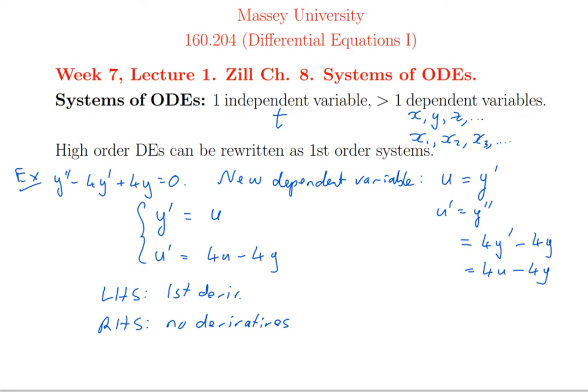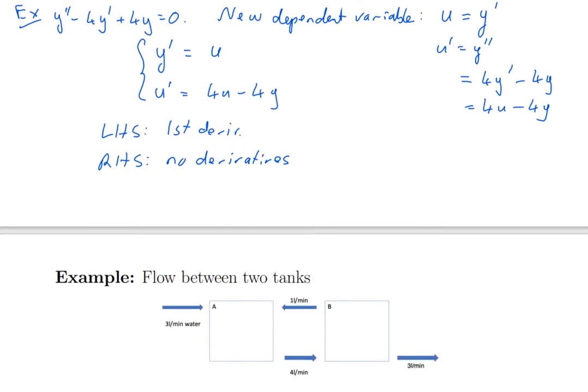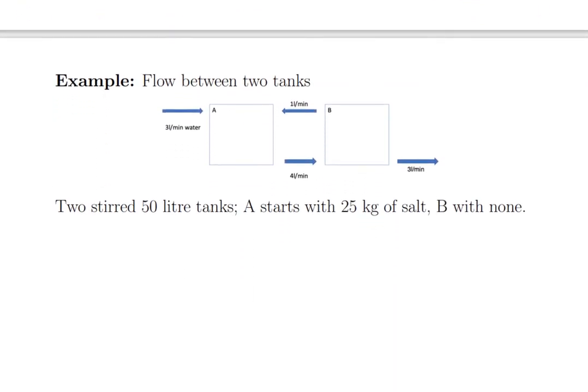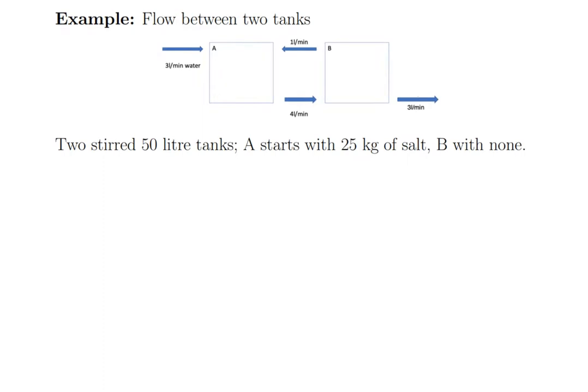Now when you have a coupled system of ordinary differential equations, you notice that you can't solve the y equation by itself because it depends on u, and you can't solve the u equation by itself because it depends on y. So it's like having two equations and two unknowns. They must be solved as a simultaneous system of two equations and two unknowns. Well today we won't actually solve any of these systems, just look at some examples of where they come from.